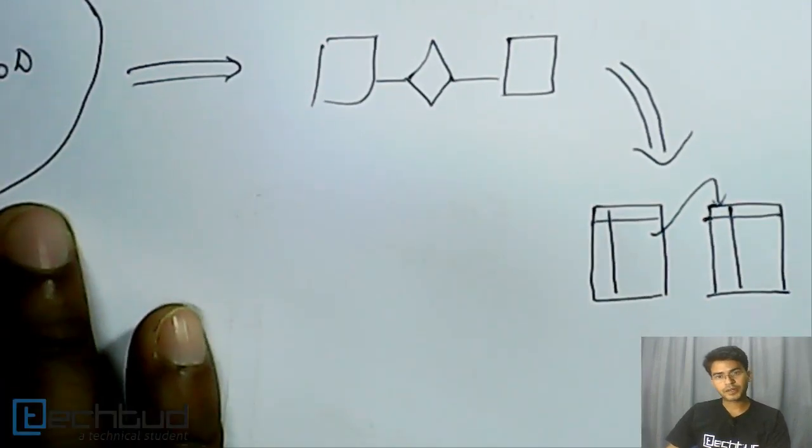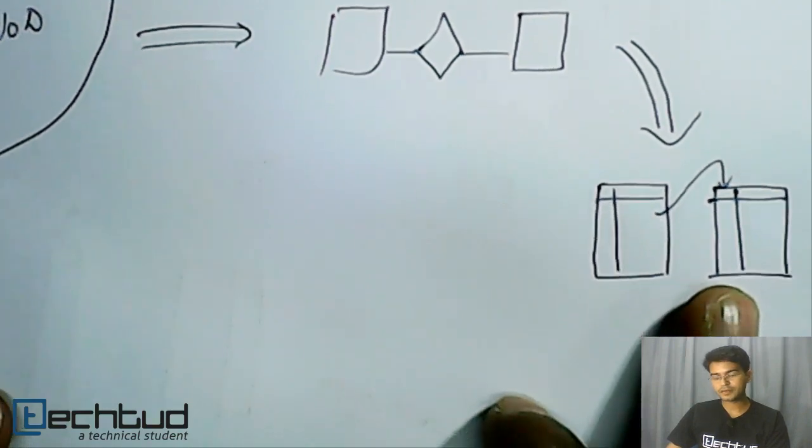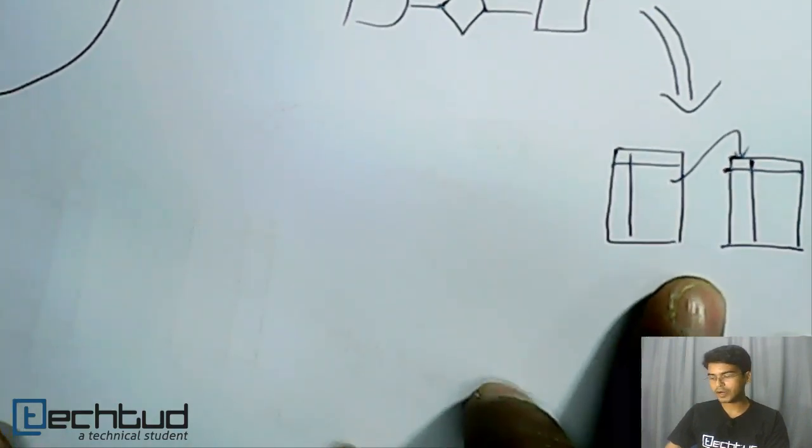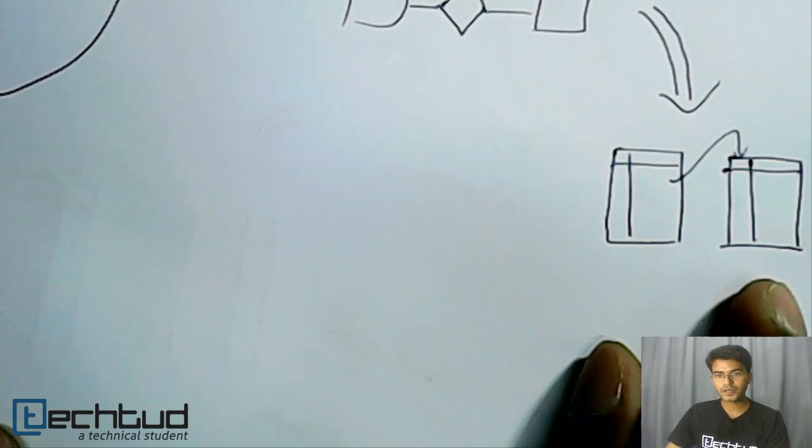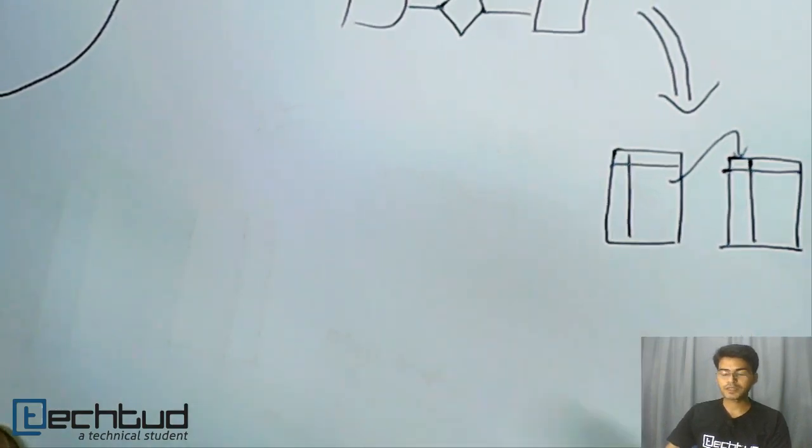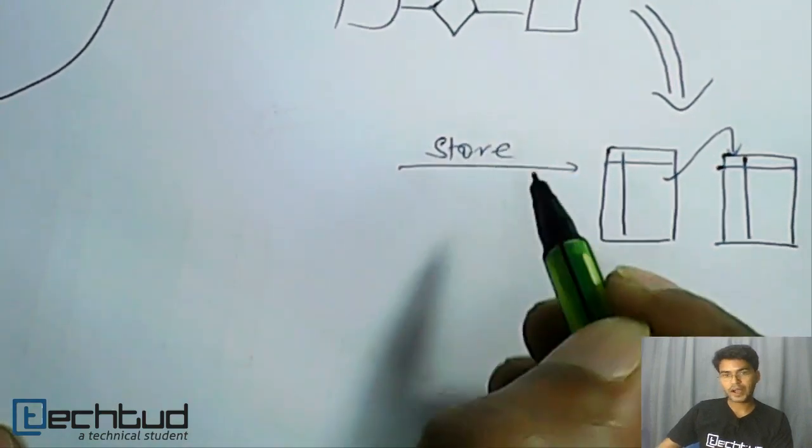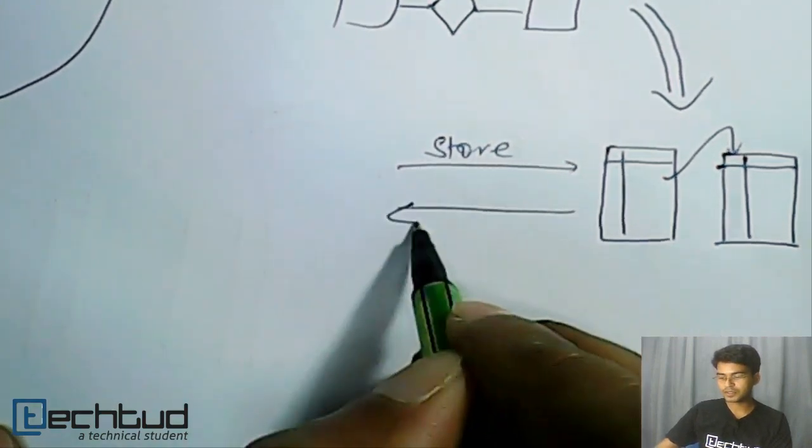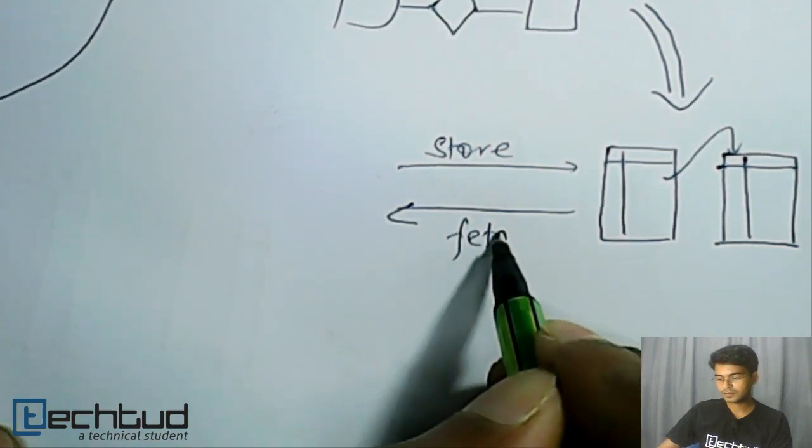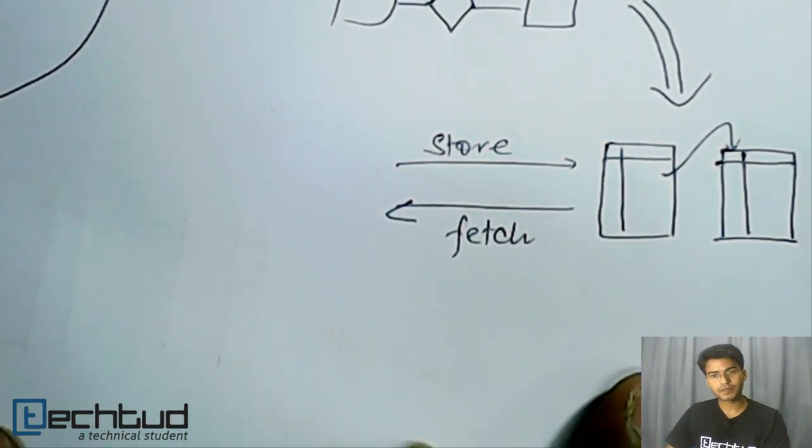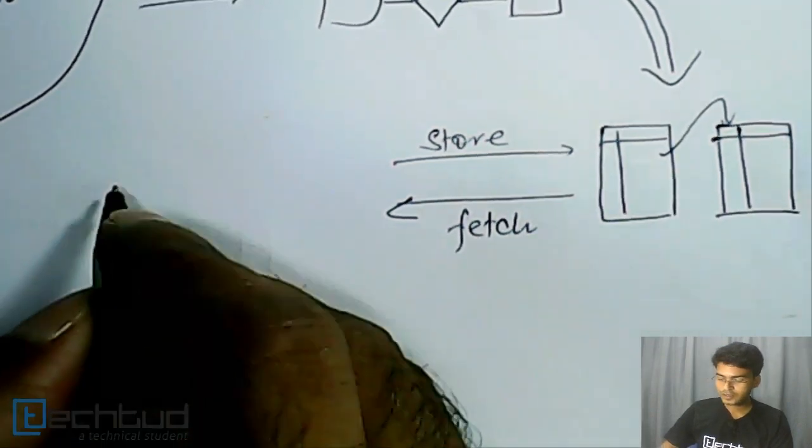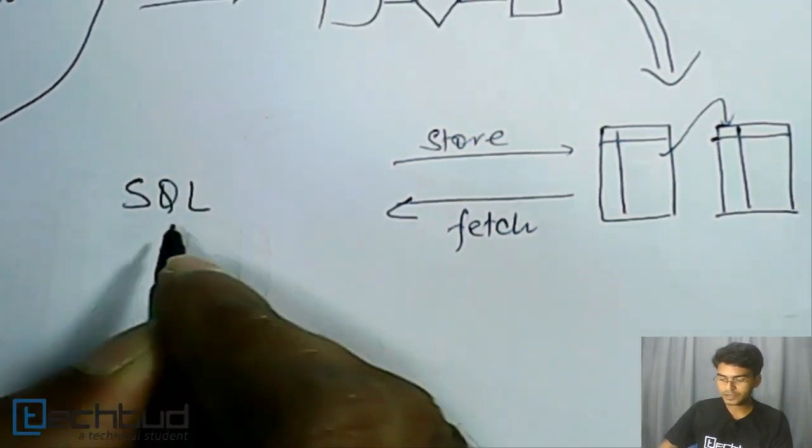So from the requirement, we have came up to the database design. Now our database is ready to use. We have to use this database. So use means we have to store data and we have to retrieve data from this. So this storage and retrieval will be done through a query language, through a mechanism which every database should have and it is called SQL, structured query language.